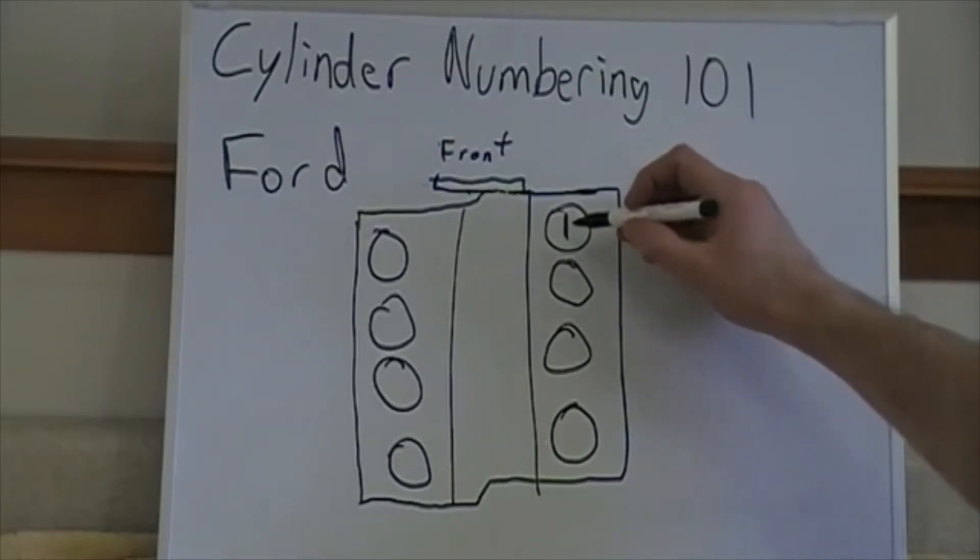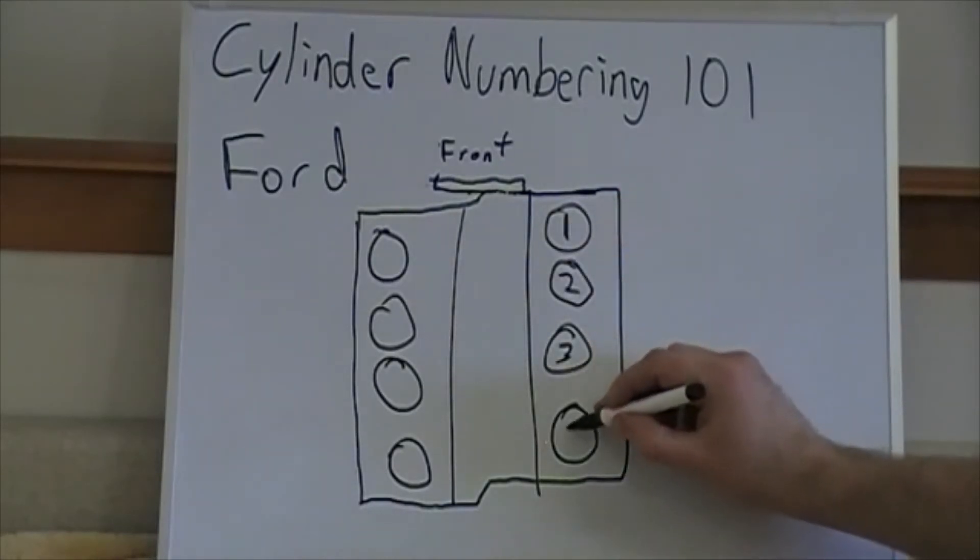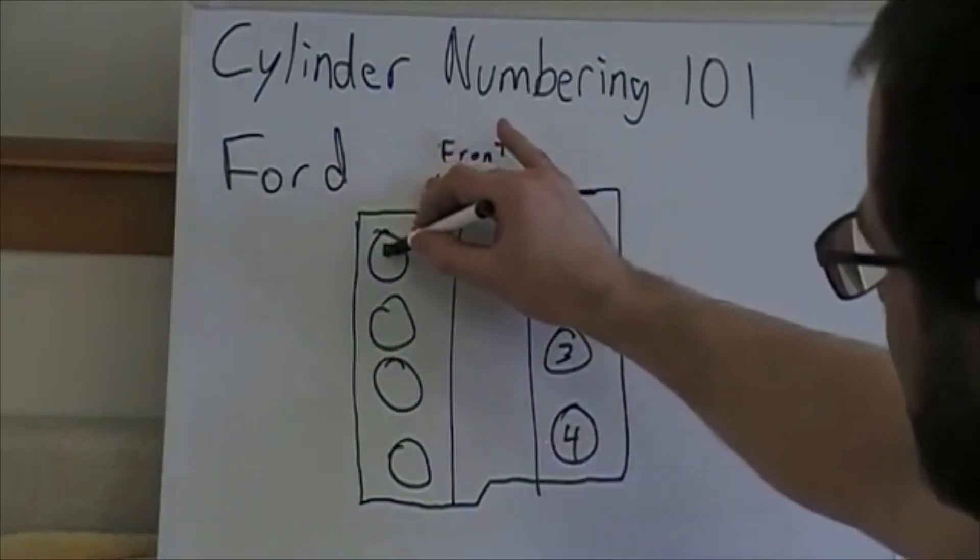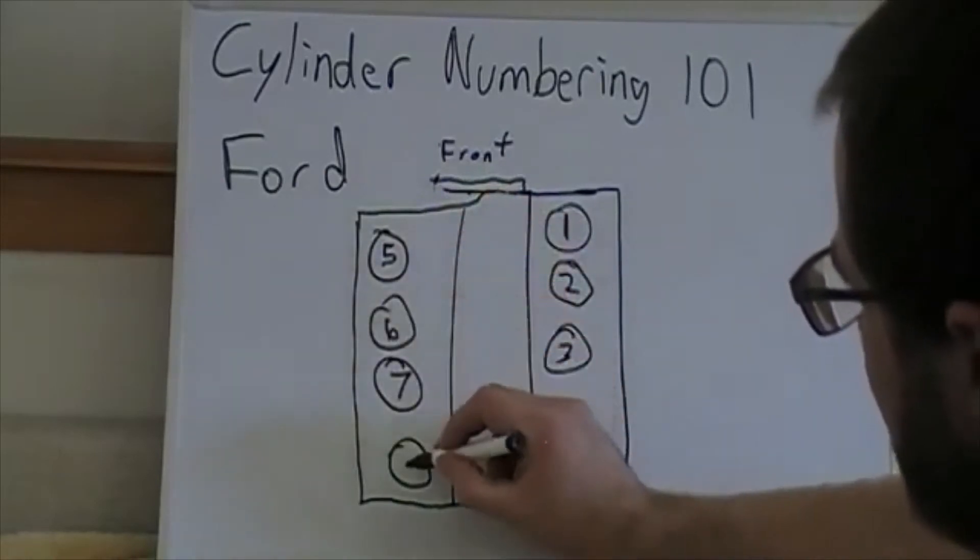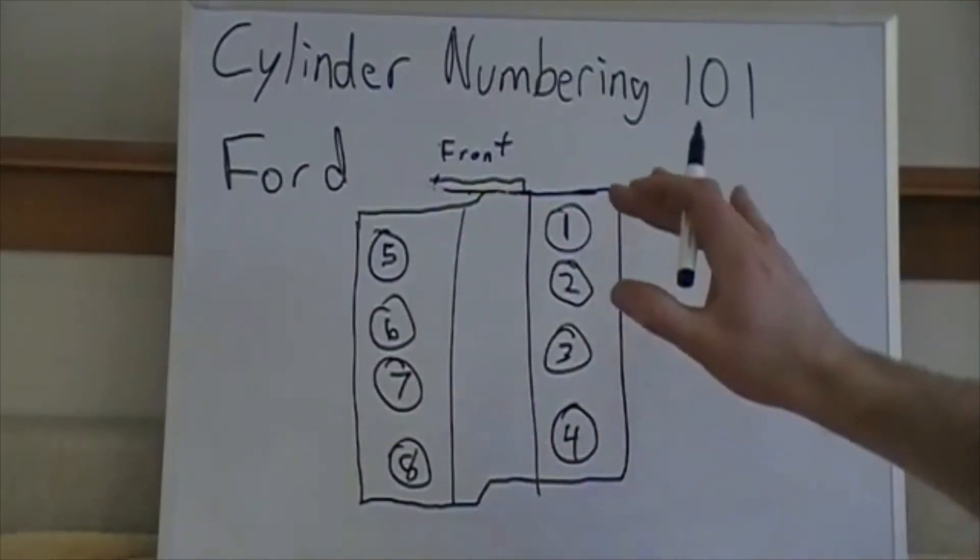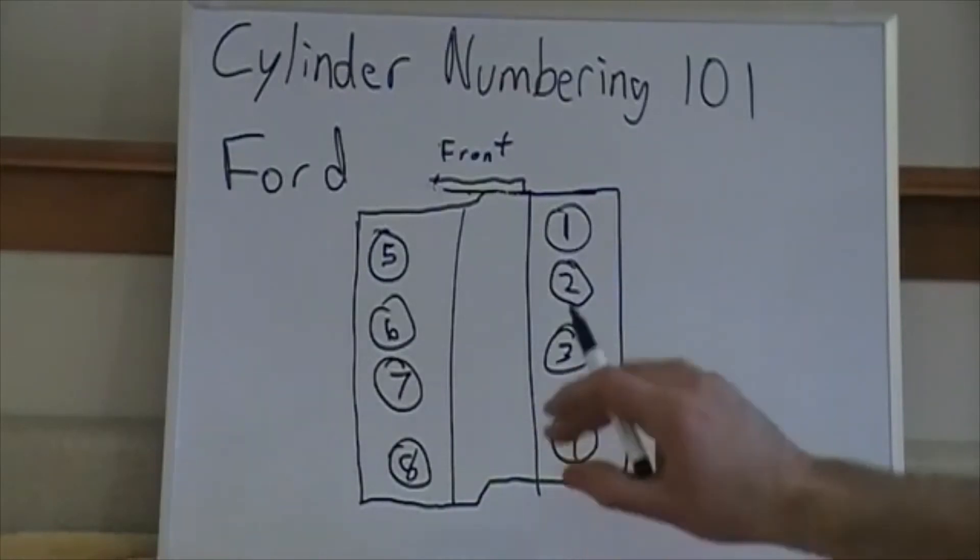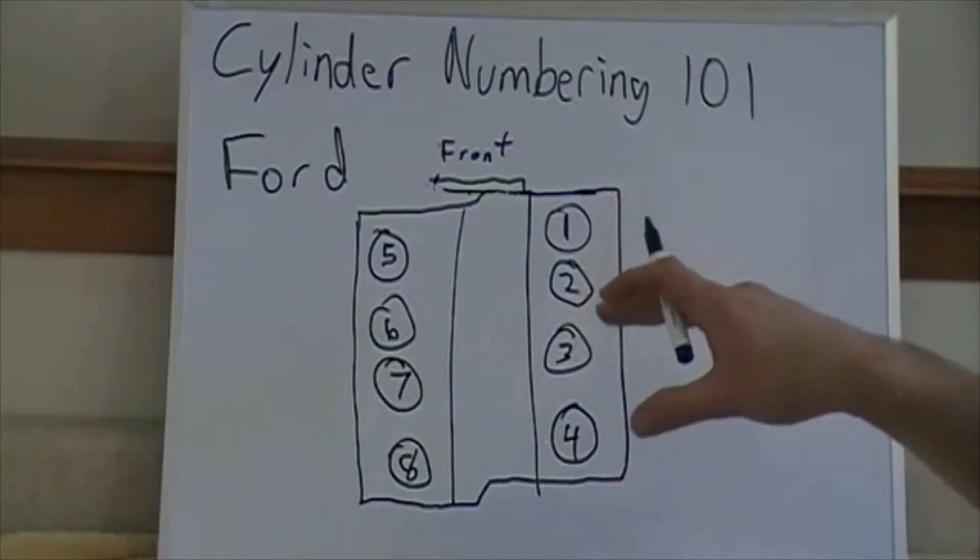So the way that Ford numbers is all down one bank. So they will start off with one, two, three, four, and then they switch over to the driver's side and do five, six, seven, eight. And I'm not going to sit here and tell you which way is right or which way is wrong. But this one screws people up if they're not familiar with Fords.